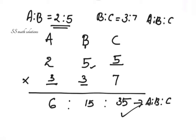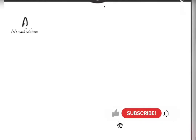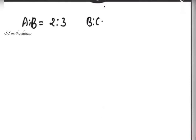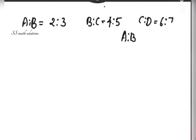Let's check one more. The next question is: a is to b is equal to 2 is to 3, b is to c is equal to 4 is to 5, and c is to d is equal to 6 is to 7. We need to calculate a is to b is to c is to d.